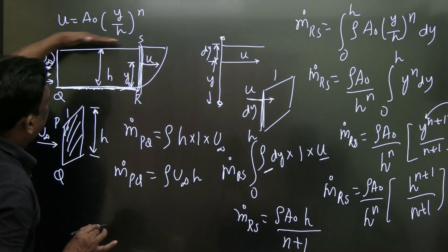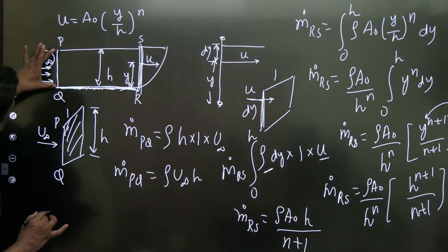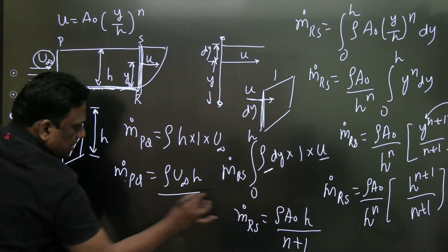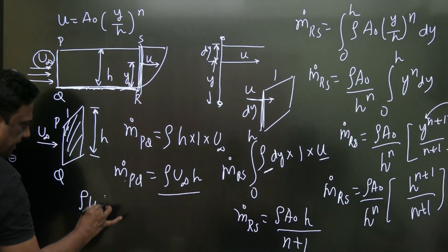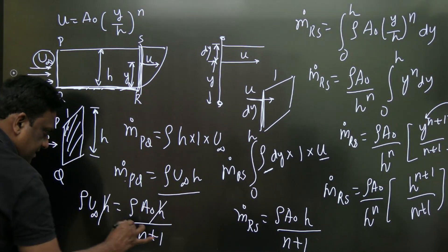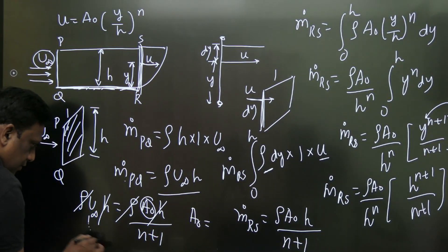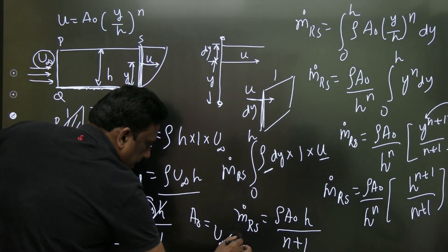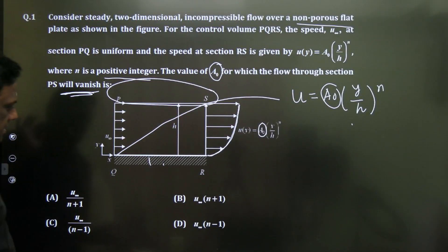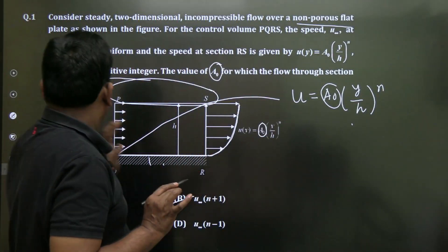For the flow through PS to vanish, the mass flow rate through PQ must equal the mass flow rate through RS. Setting ρ·u∞·h = ρ·a₀·h/(n+1), the h and ρ cancel, giving a₀ = u∞·(n+1). This is the required value of a₀. Hope this is clear — it's a good question.